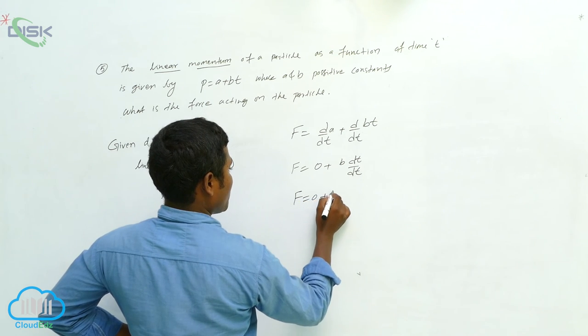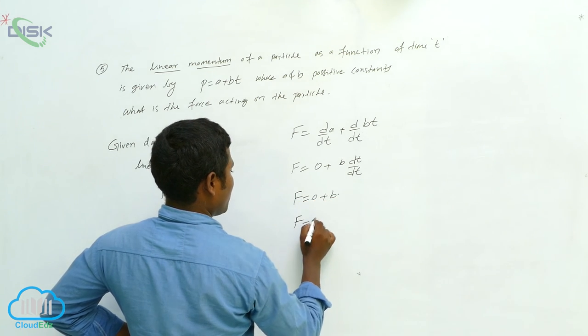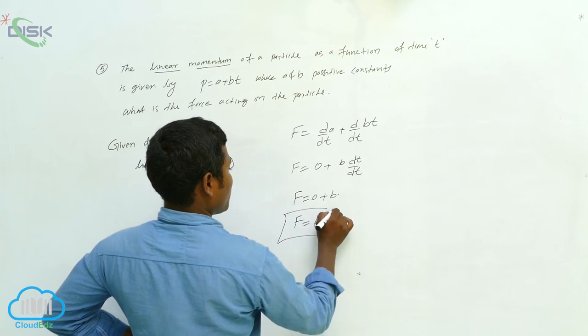Zero plus b equals F equals b. This is your answer. Can you see it a little bit?